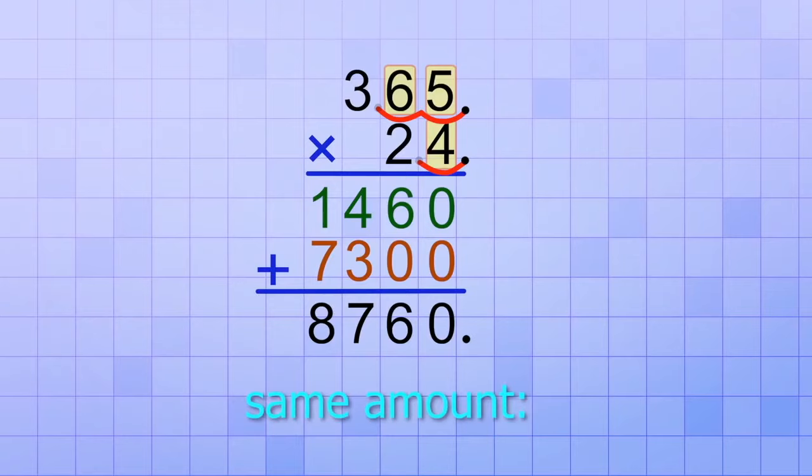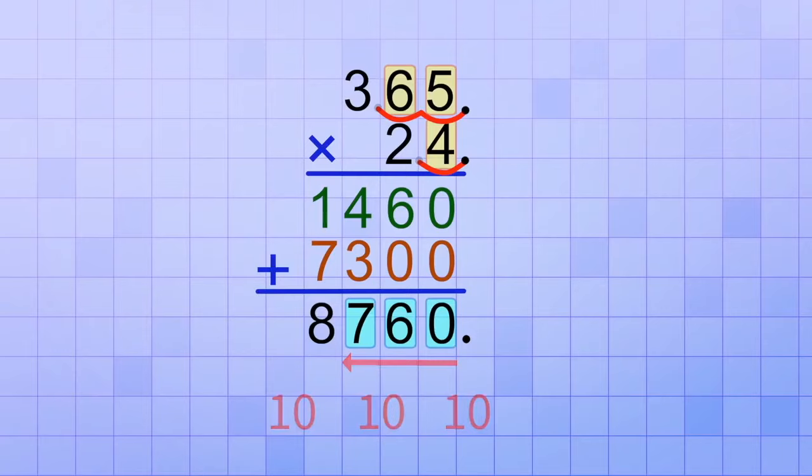we're going to have to shift the decimal point in our answer the same amount in the opposite direction. In other words, we need to move the decimal point in our answer three places to the left, which will make it smaller by three factors of 10. So, starting right here, where the decimal point would be if our answer was 8760,